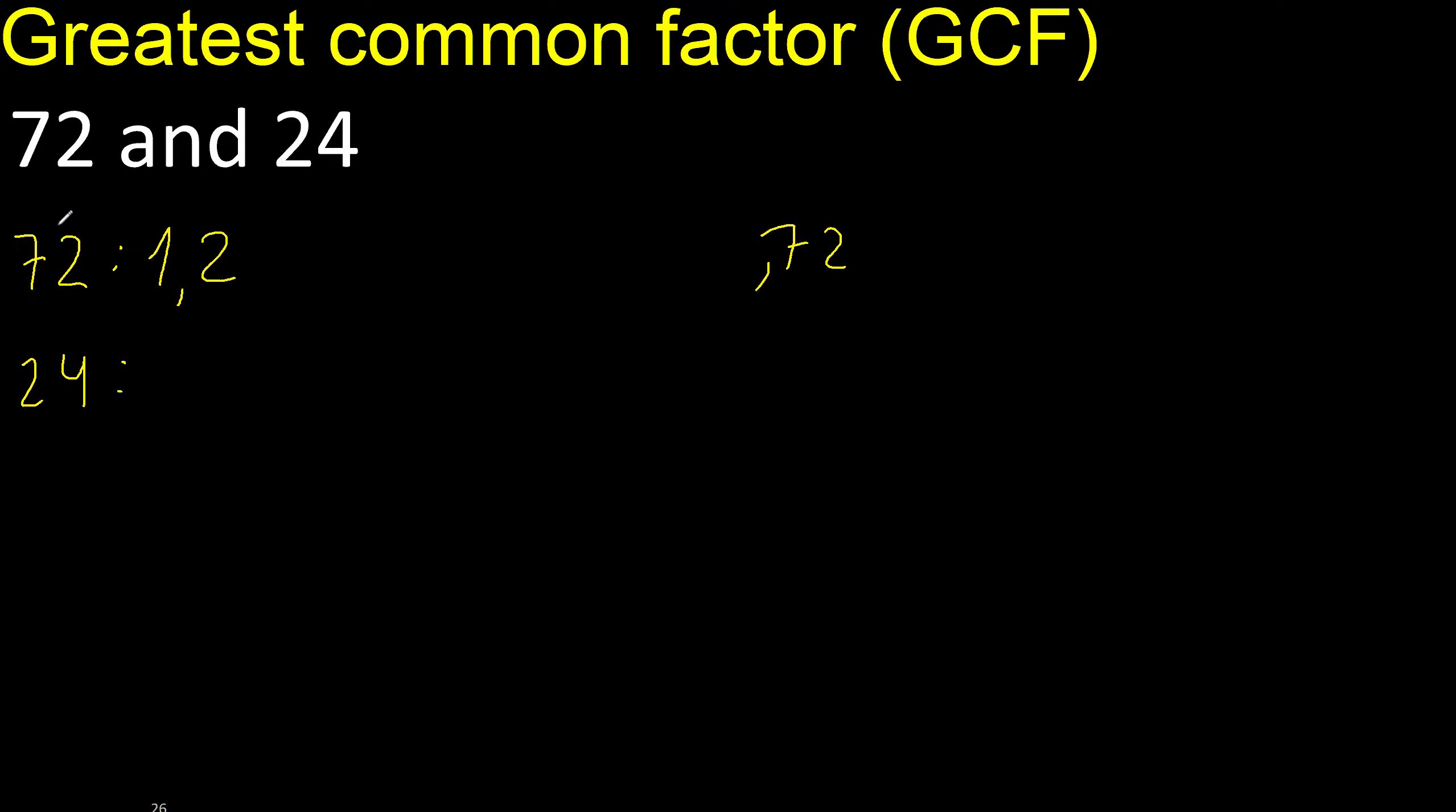72 divided by 2 is 36. Next, divided by 3 is 24. Next, divided by 4 is 18.